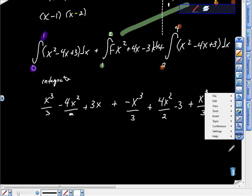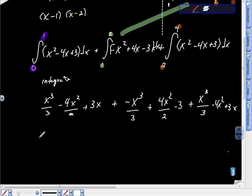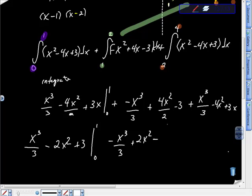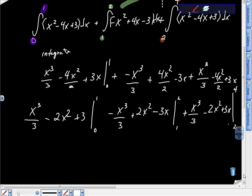We can simplify all this stuff out, and we can get x cubed over 3 minus 2x squared plus 3x as evaluated from 0 to 1. And then this, negative x cubed over 3 plus 2x squared minus 3x as evaluated from 1 to 2. Plus x cubed over 3, should have been over 2, minus 2x squared plus 3x as evaluated from 2 to 4, and then we just start using the fundamental theorem of calculus here.